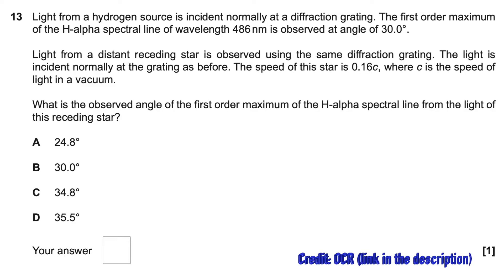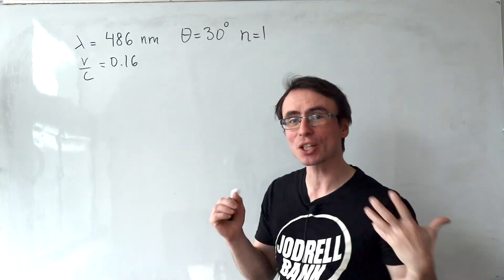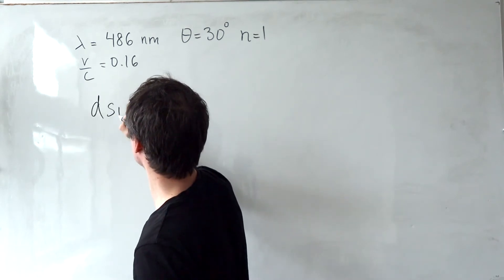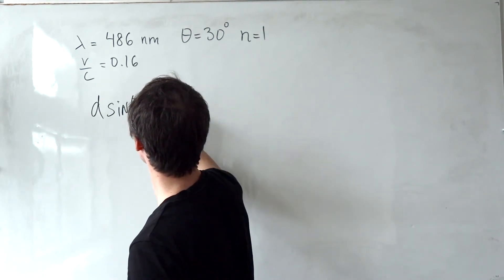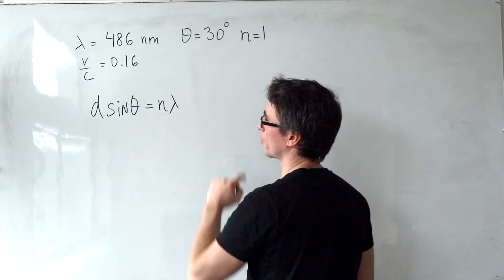This next question from OCR proved really challenging. Let's see if you can solve it for one mark. The first thing that we can do with the data that we're given is actually calculate the line separation using the diffraction gradient equation that D sine theta is equal to N lambda. We're given the angle, the order of diffraction, and also the wavelength.